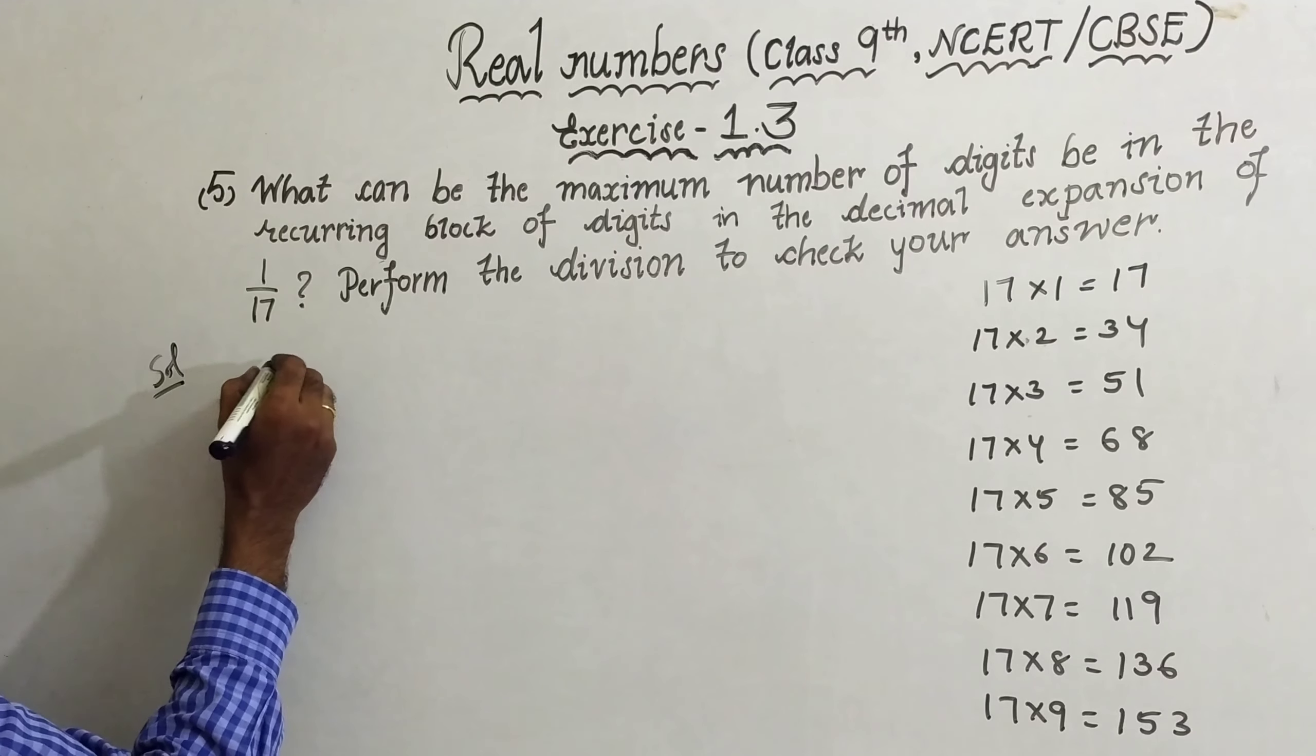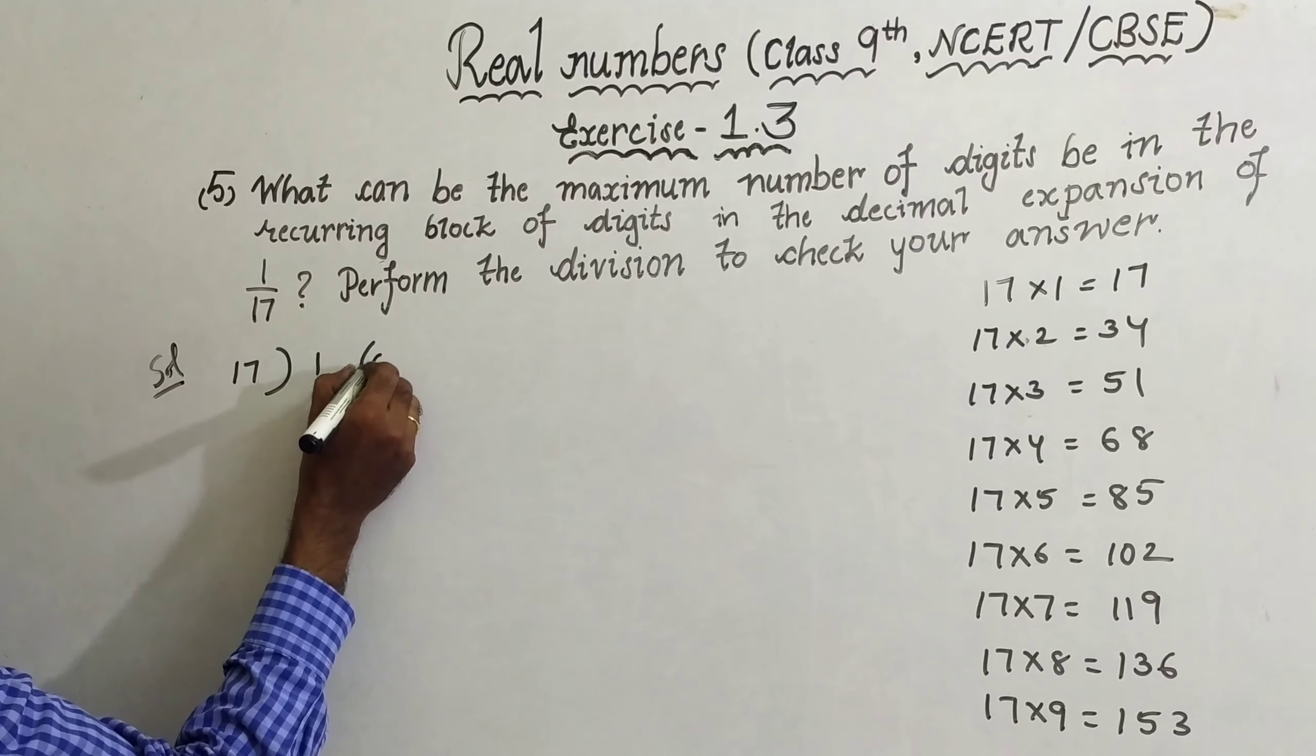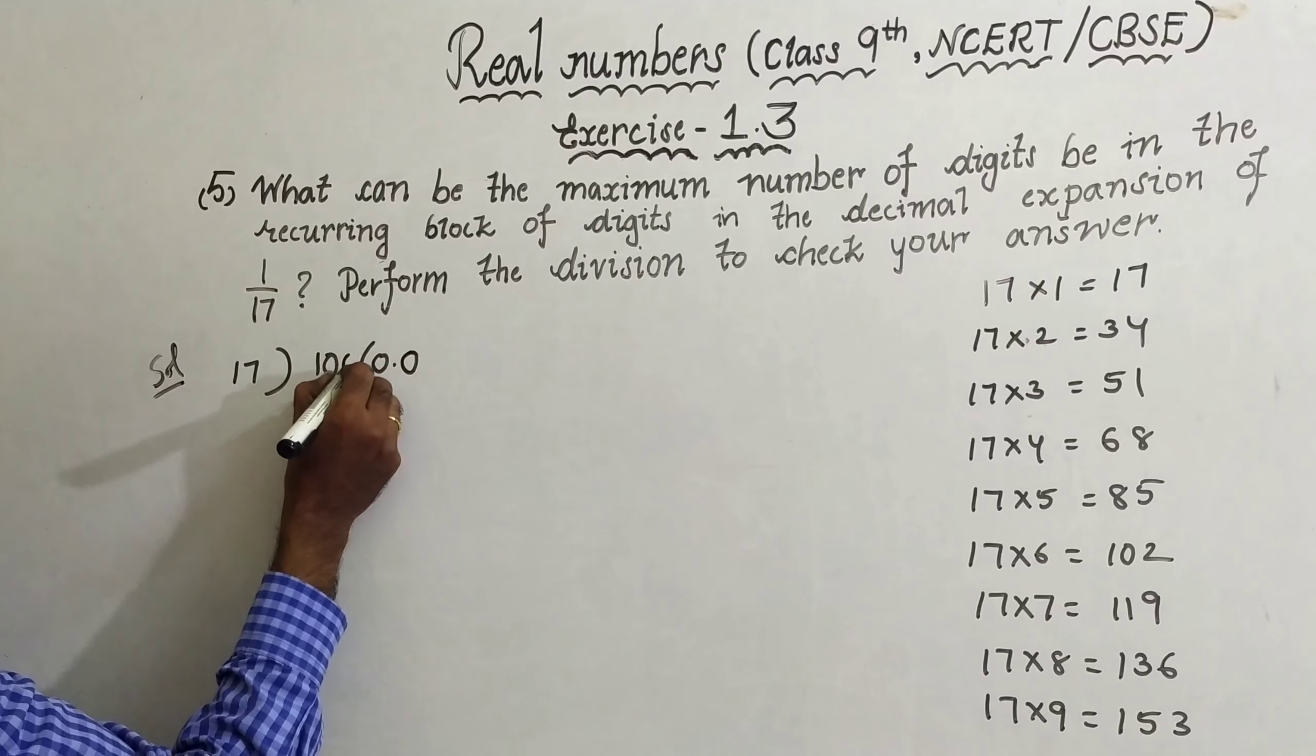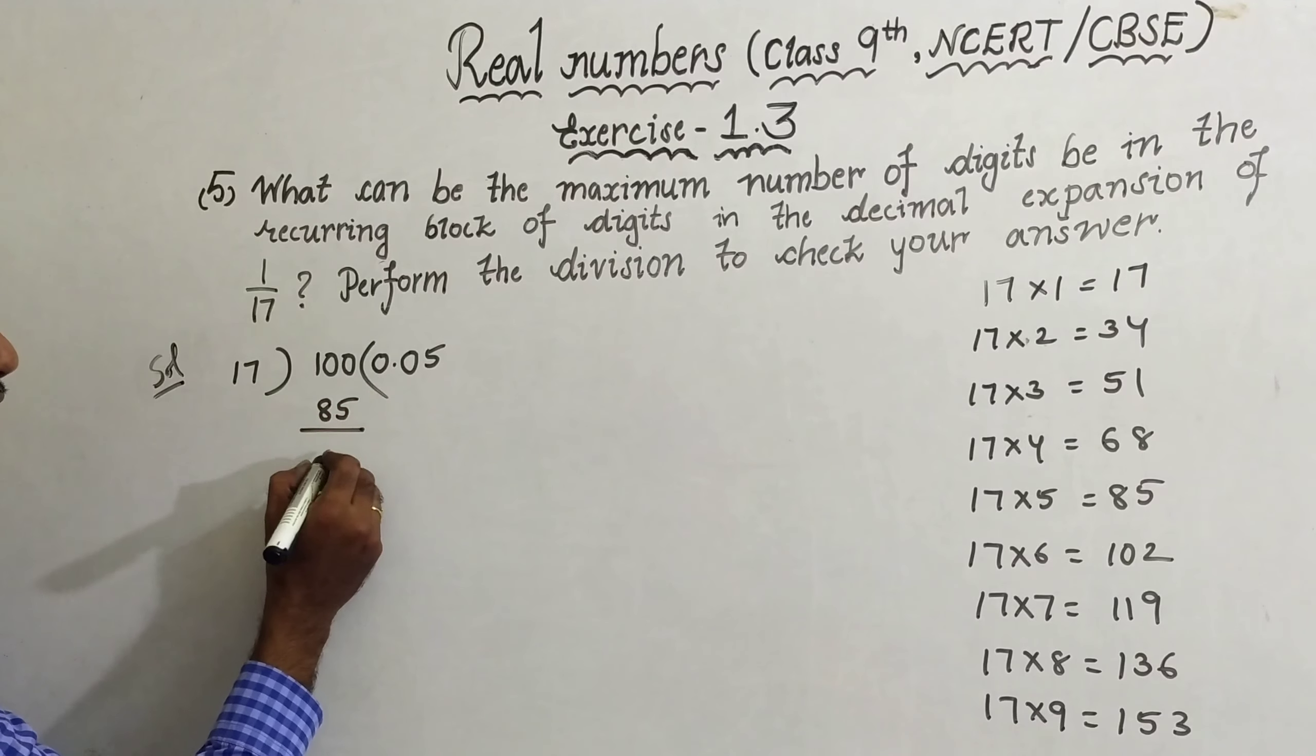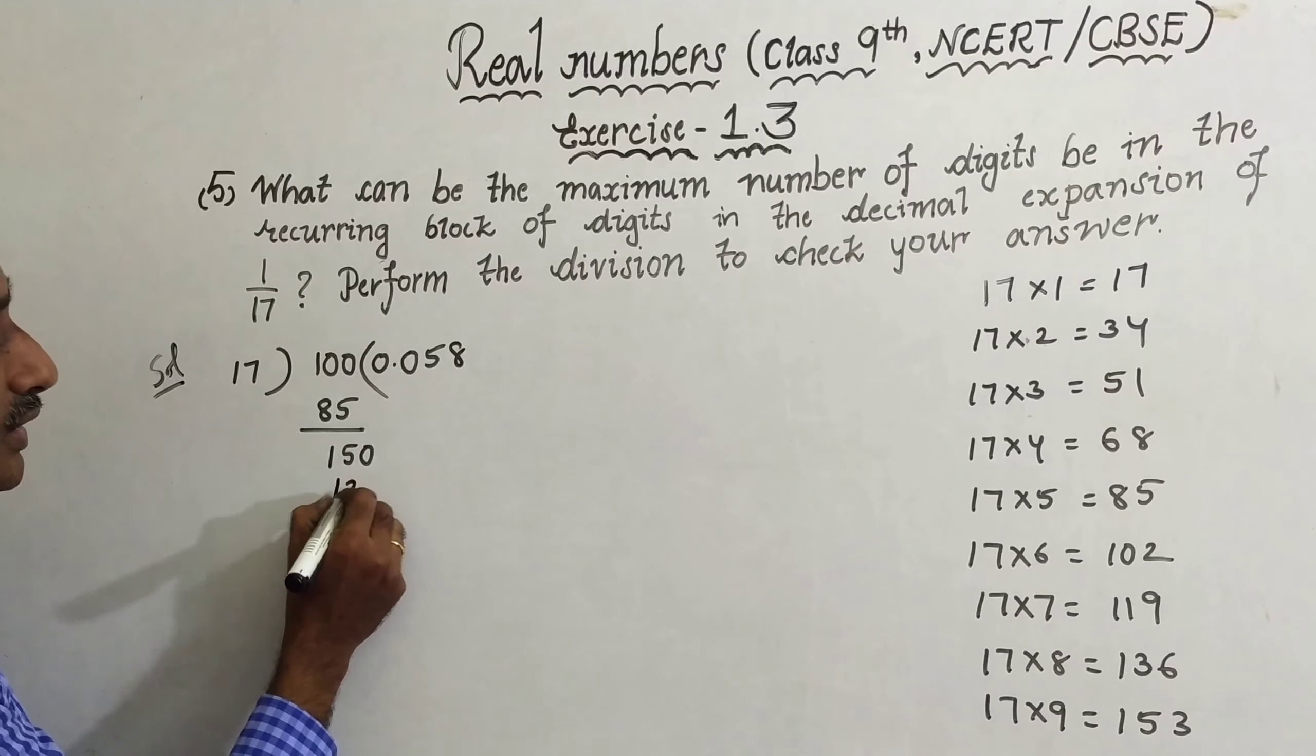Carefully you have to observe. 1 divided by 17, so 1 is very less compared to 17. Take zero point, take the zero here. Again it is very less than 17, take one more zero here. Now 100 divided by 17, 17 times 5 is 85.